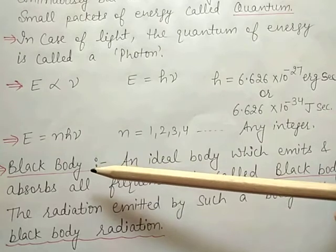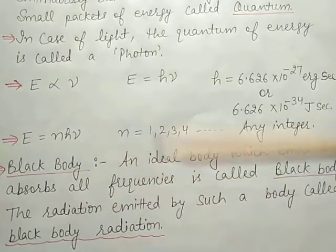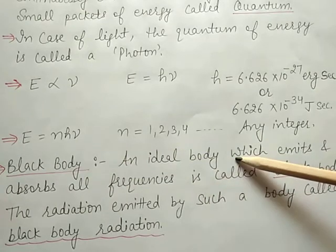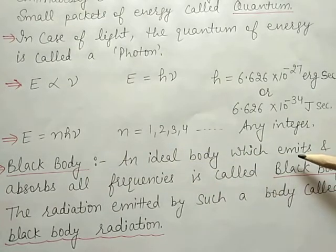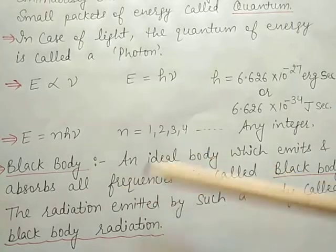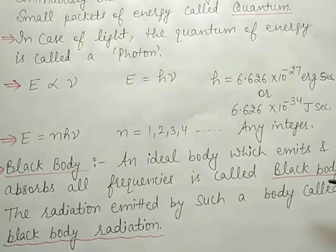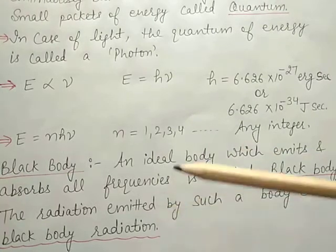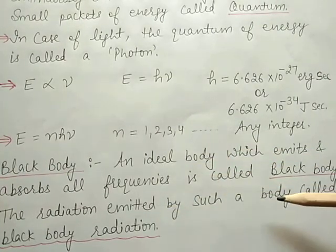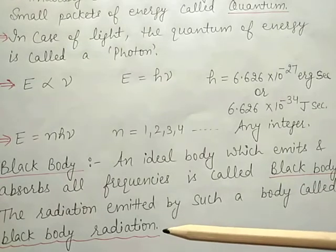The next topic is the black body. A black body is an ideal body which emits or absorbs all frequencies. The radiations emitted by this body are called black body radiations.